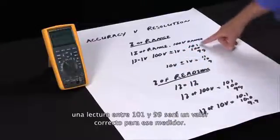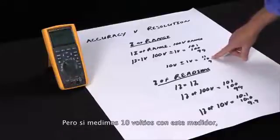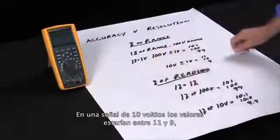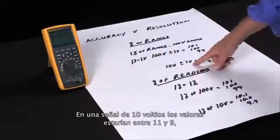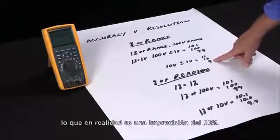So a reading between a hundred and one and ninety nine is actually a good reading on this meter. But if we're measuring ten volts on this same meter, the one percent is plus or minus one volt. On a ten volt signal, plus or minus one volt will give us between eleven and nine, which is actually an inaccuracy of ten percent.